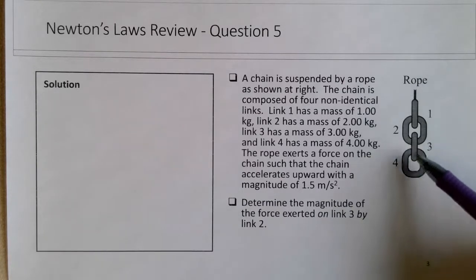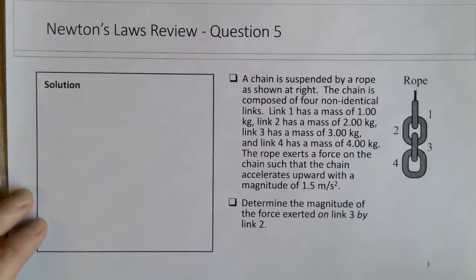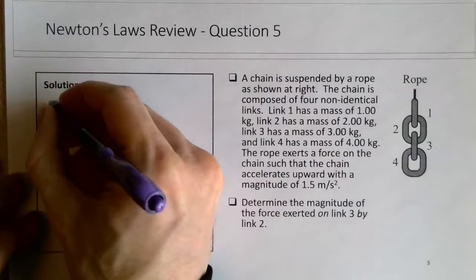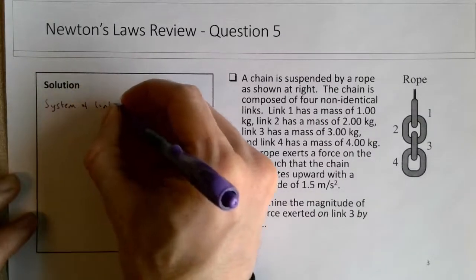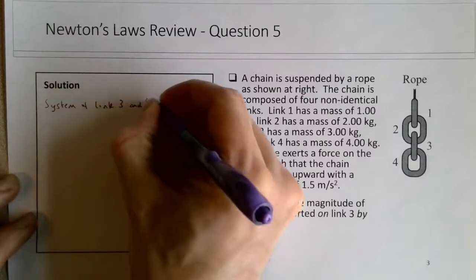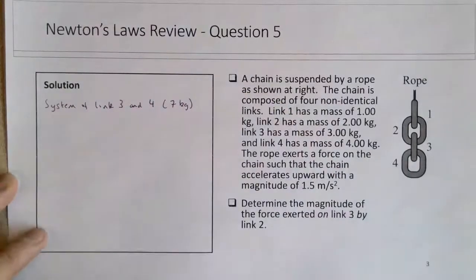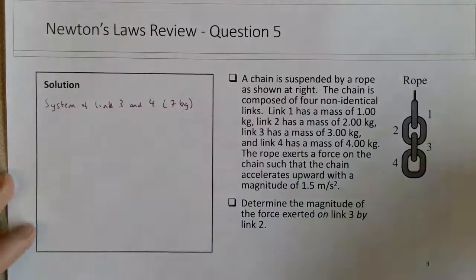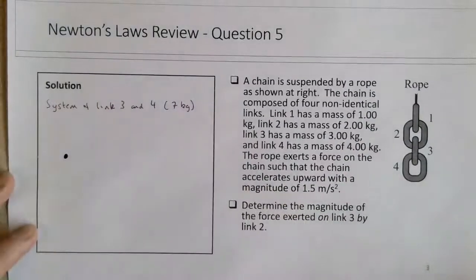So the much quicker way to solve this problem is to combine link 3 and link 4 into a 7 kg object. So if we think about the system of link 3 and link 4, and if we look at the forces on that particular system, there would be a weight force.